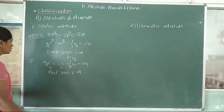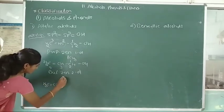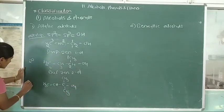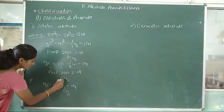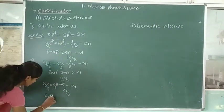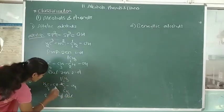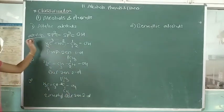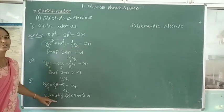Third, tertiary allylic alcohol: CH3–C(CH3)=CH–CH3 with OH. Name of this compound: 2-methylbut-3-en-2-ol. These are the three examples of allylic alcohol — primary, secondary, and tertiary.